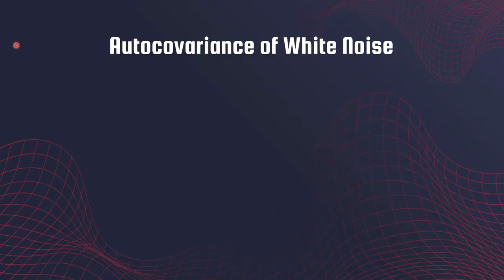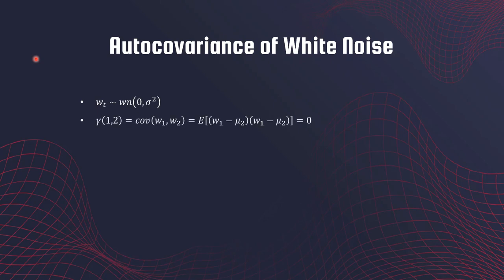Let's calculate the auto covariance function of white noise. γ(1,2) is basically the covariance of W_1 and W_2, and it is 0 because different points in white noise are not correlated. γ(2,2) is the covariance of W_2 with itself, which is nothing but the variance of W_2, which equals σ².